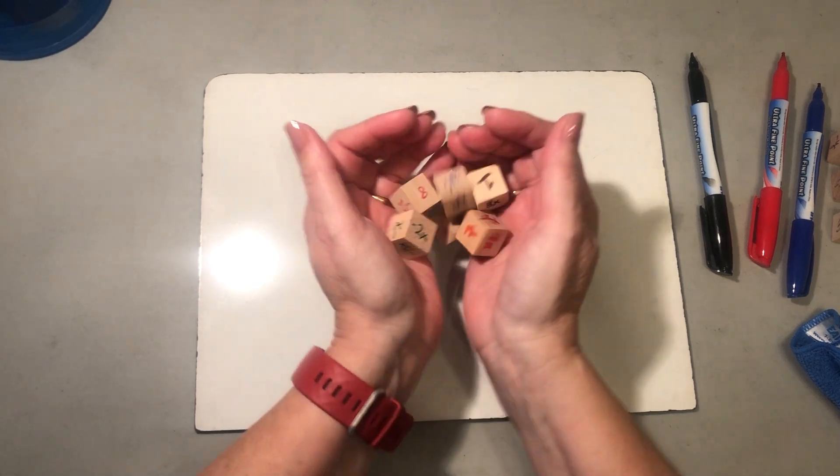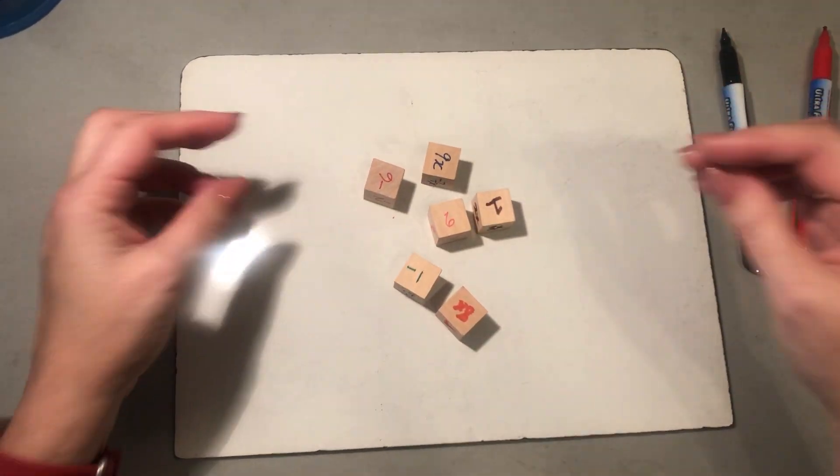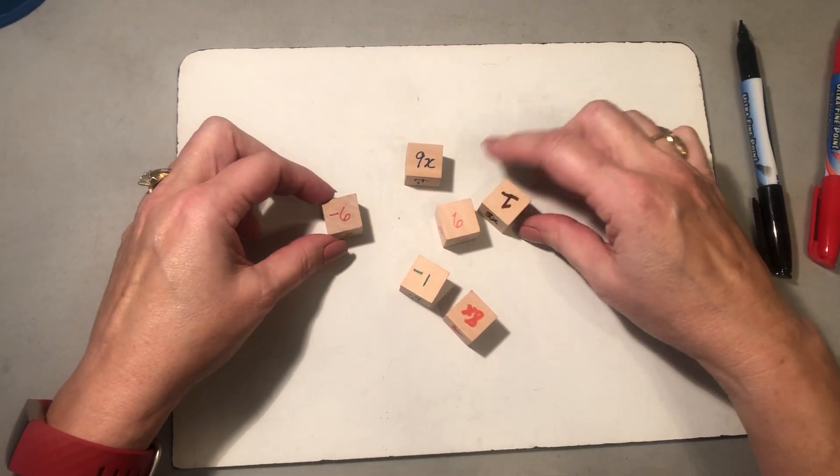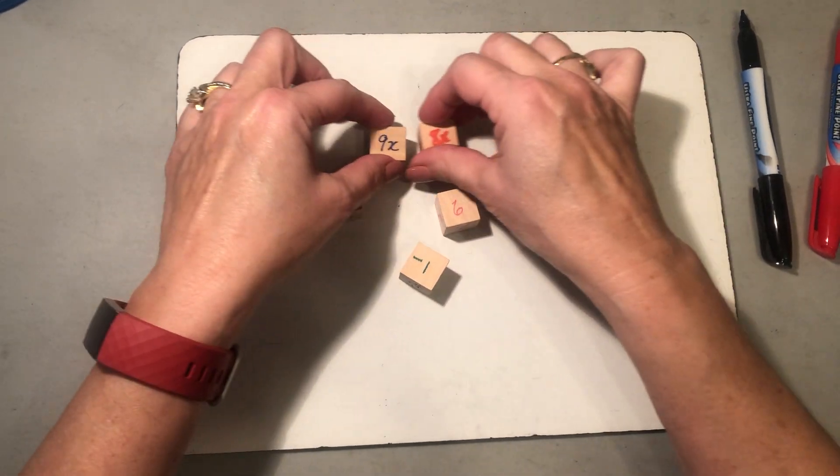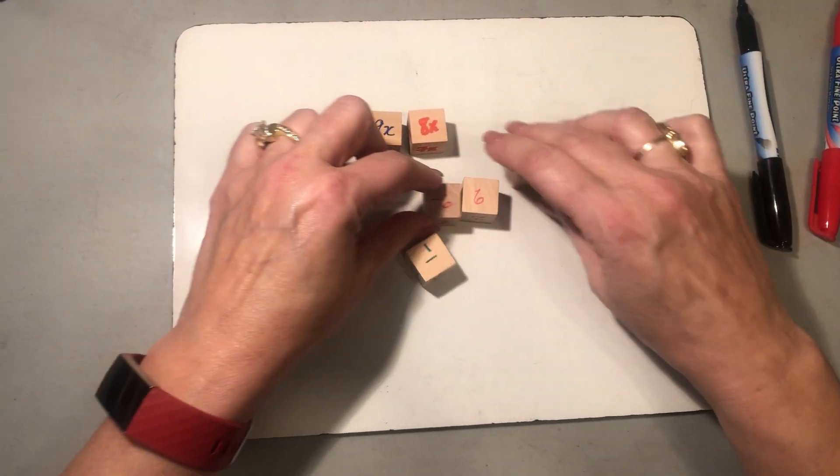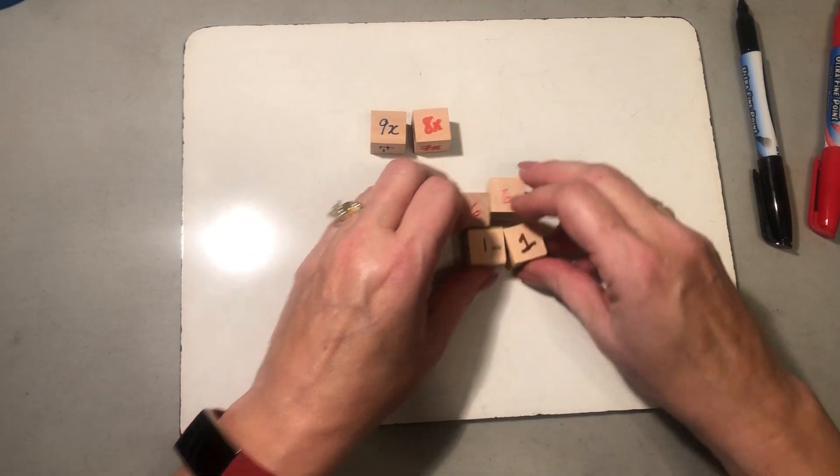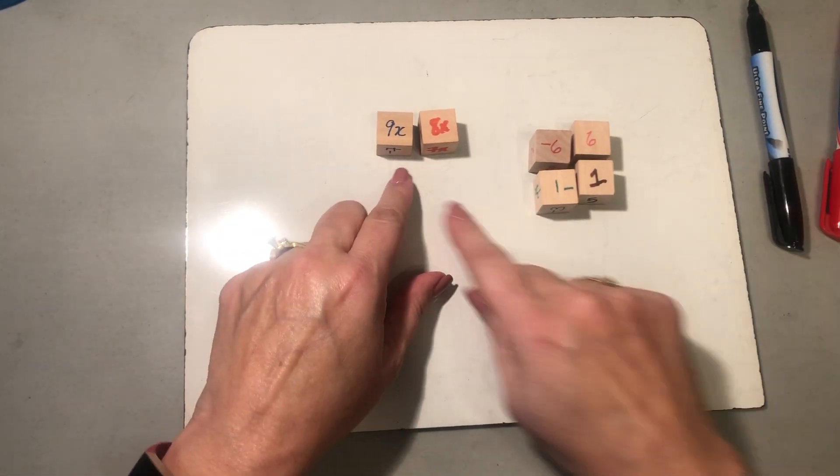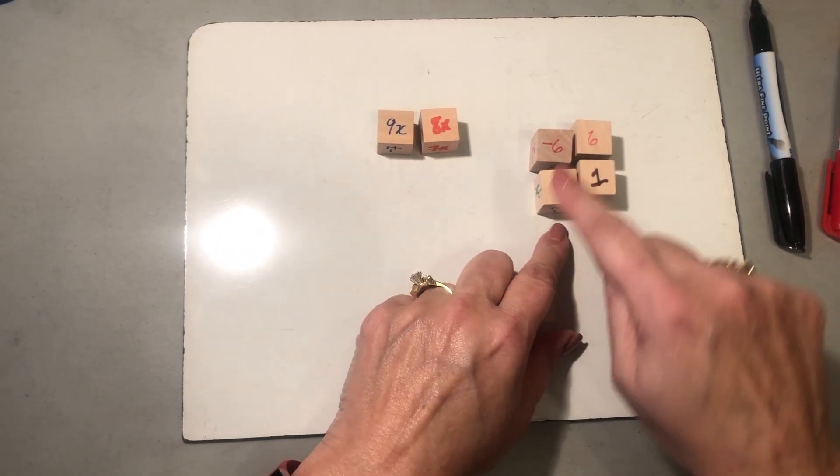So we're going to practice on one together. First I'm going to roll that. Okay, and then what I'm going to do is put together numbers with numbers and variables with variables. So here I have x's and here these are all number cubes.